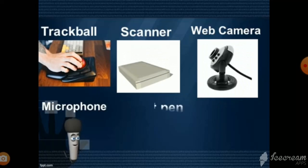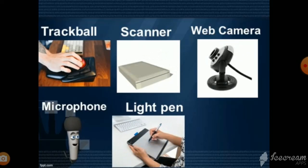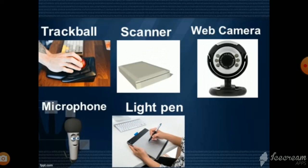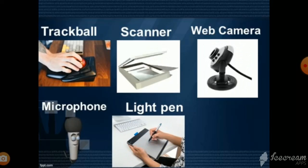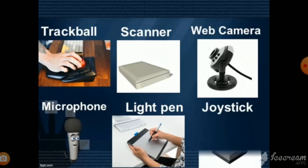Number 5, light pen. It looks like a pen that can be used on a special pad. Whatever you write on this pad can be seen on a monitor. Number 6, joystick. It is used for playing games. It helps to move the item on the screen.